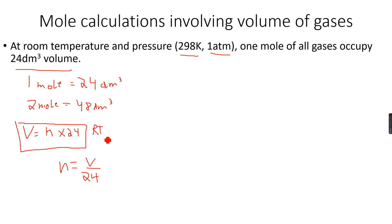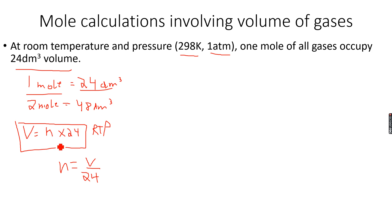This formula applies only at RTP — room temperature and pressure. V equals n times 24. When n equals 1 we get 24, and when n equals 2 we get 48. If we need to calculate the number of moles of gas from a given volume at room temperature and pressure, we rearrange the equation.